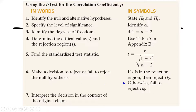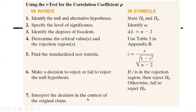The decision rule is: if the computed test statistic t is in the rejection region, we reject the null hypothesis; otherwise, we fail to reject the null hypothesis. After that, interpret the decision in the context of the original claim.